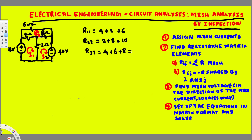Now we have all these diagonal values. The next step is the off-diagonal elements R-ij — we look at the resistance shared between each pair of mesh currents. For I1 and I2, the two-ohm resistor is shared, so R12 and R21 equal two ohms. We put a negative sign in front of shared resistances — that's the key difference.